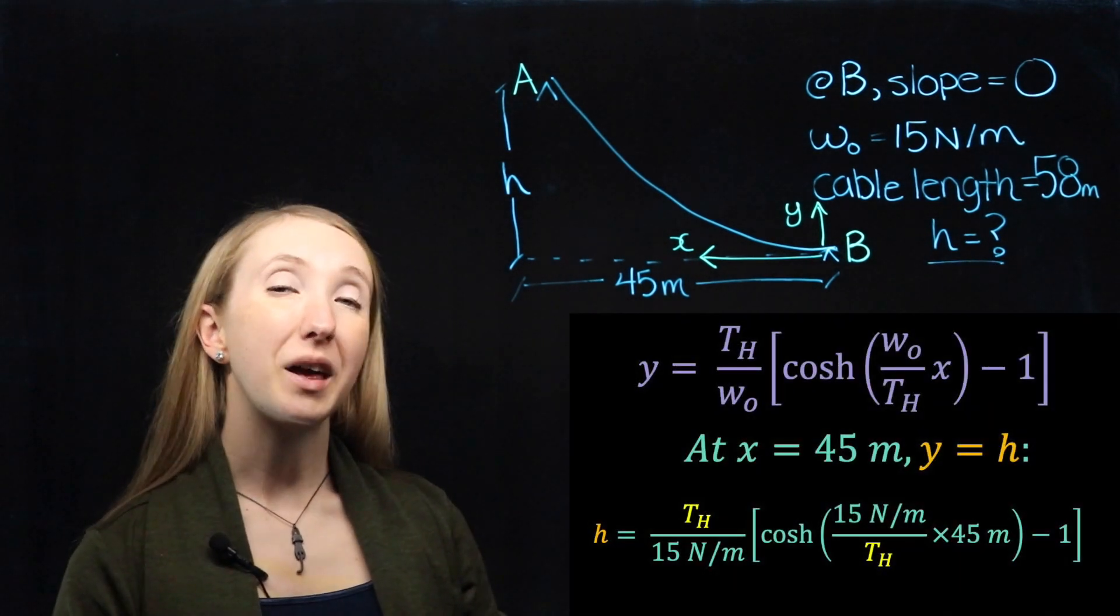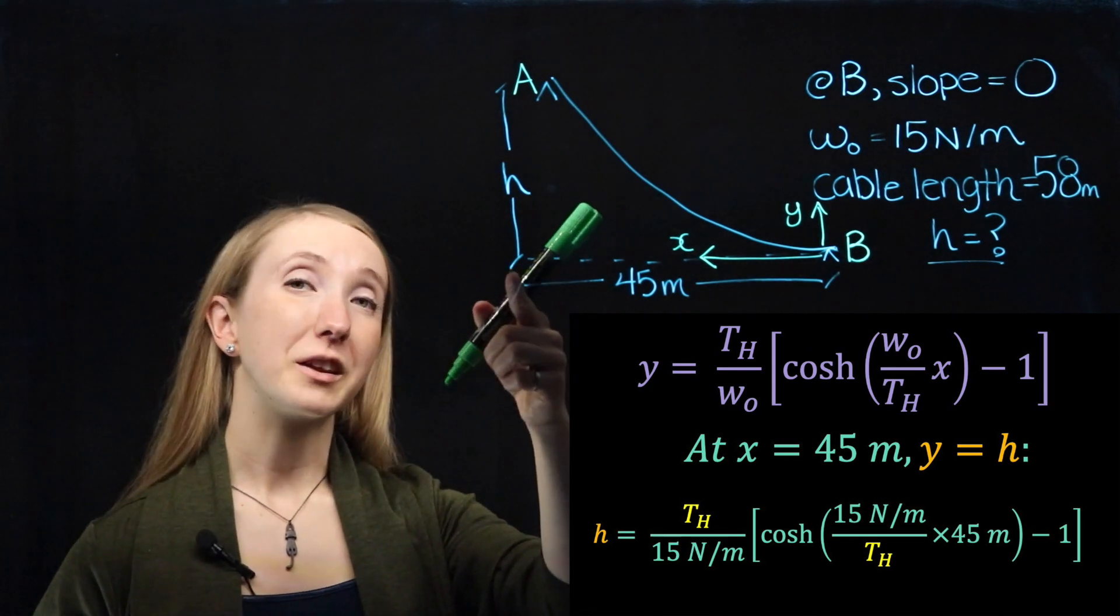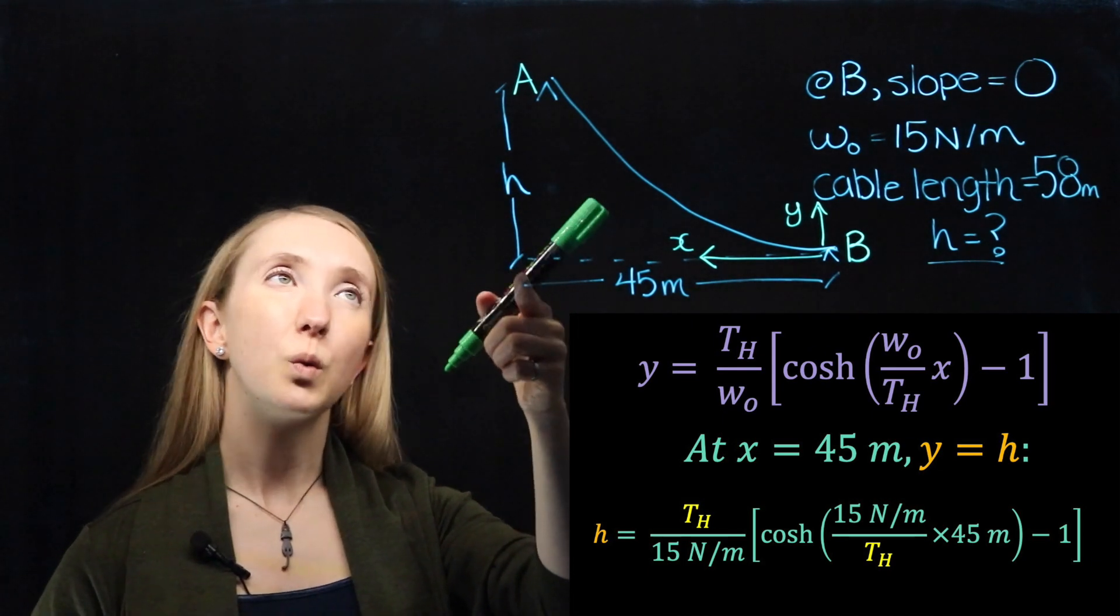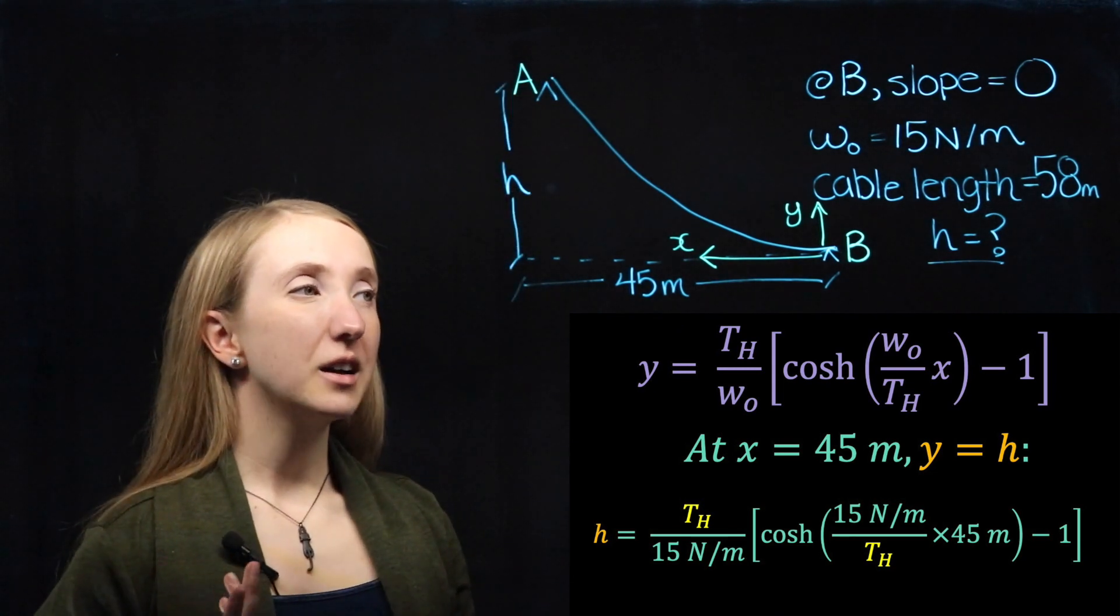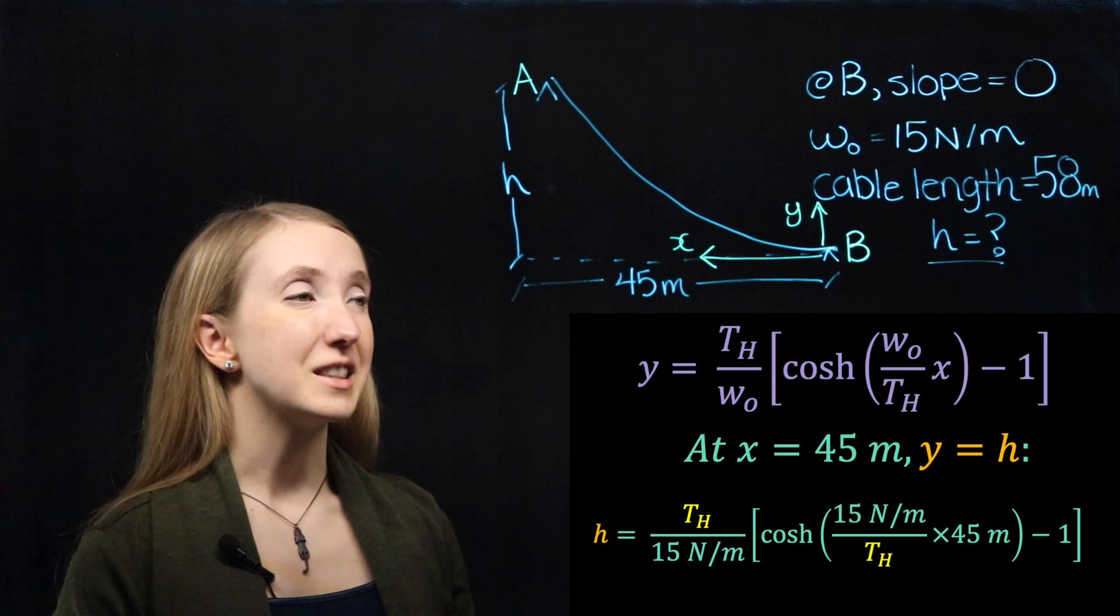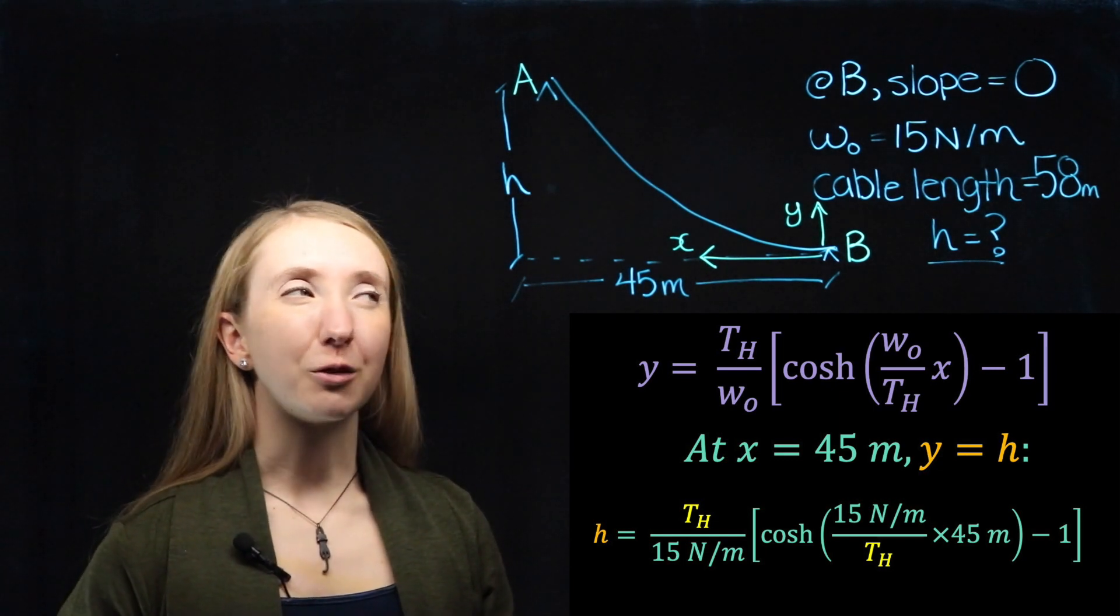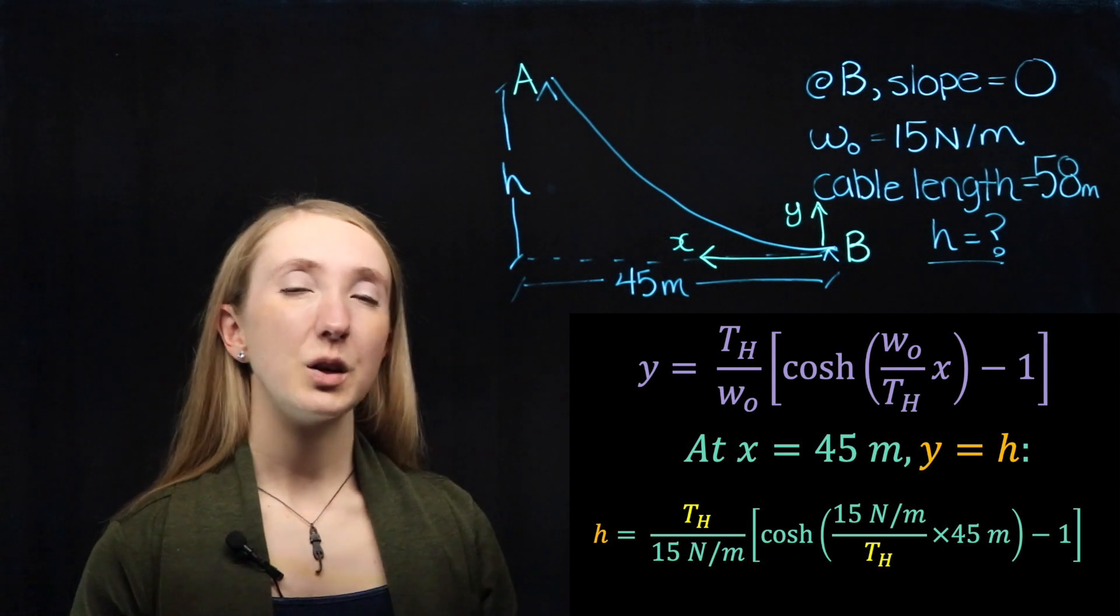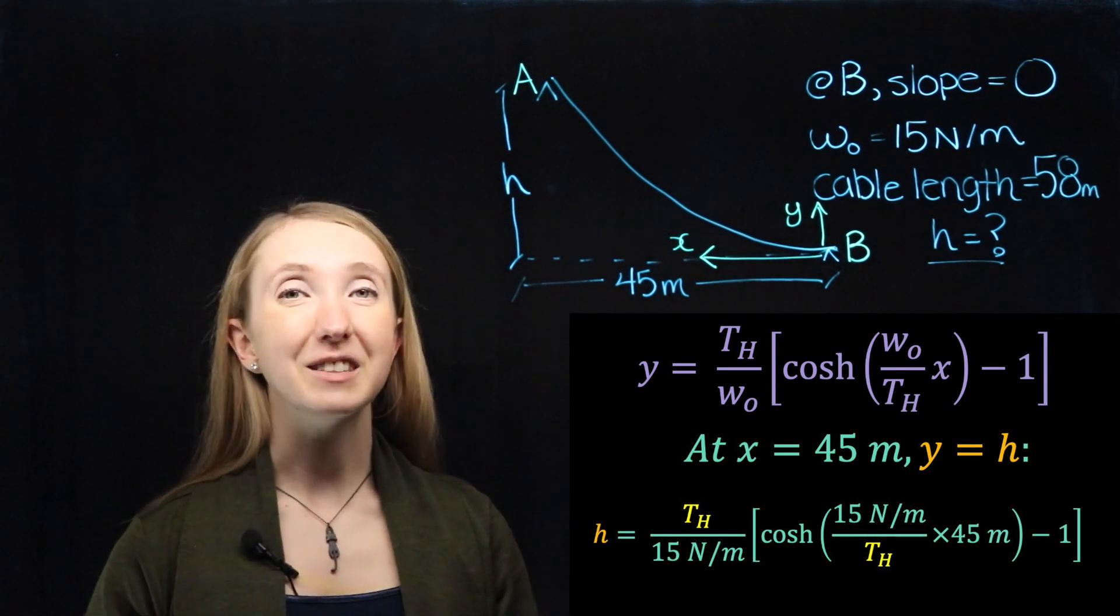For this equation, we have a boundary condition where when X is equal to 45 meters, we know that Y will be equal to H. So we can plug our known parameters into that equation, and we see that we can almost solve for H. The only thing we need is TH, our constant horizontal tension.